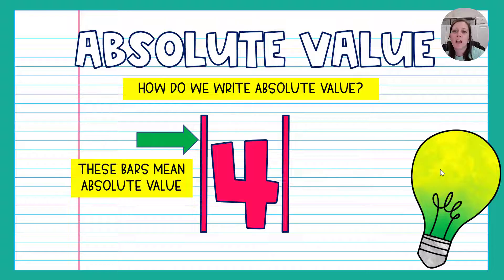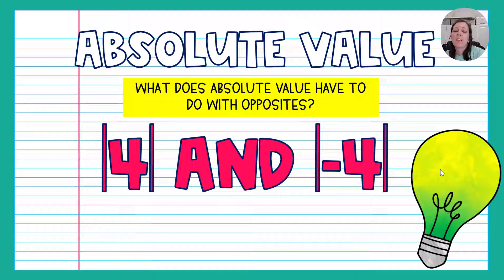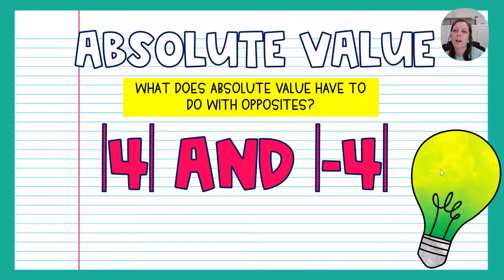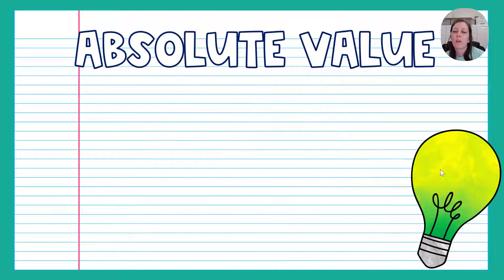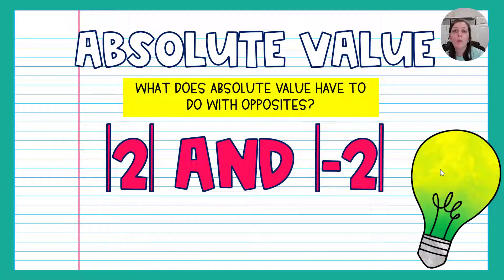Our second learning goal was to know what absolute value has to do with opposites. This is asking what's the absolute value of four and the absolute value of negative four. Four is four spaces from zero, so the absolute value of four is four. Negative four is also four spaces away from zero, so the absolute value of negative four is four. Two and negative two are both two spaces away from zero, so their absolute values are both two. Opposites have the same absolute value — let me say that again: opposites have the same absolute value.